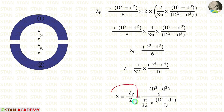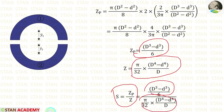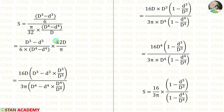Now let us calculate the shape factor, Zp by Z. The Z value we have already calculated and Zp we just calculated. We can apply both of them. Taking pi by 32 times D inversely and multiplying, 16 times 2 gives 32 and 3 times 2 gives 6.